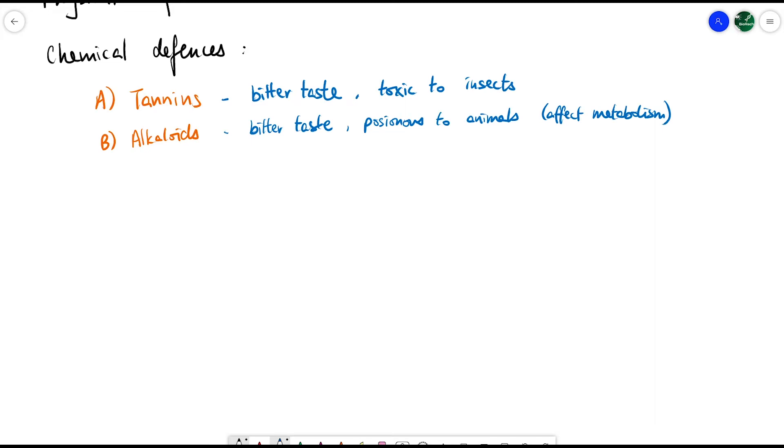The second type is alkaloids, which have a bitter taste and are poisonous to animals by affecting their metabolism. Some chemicals we use nowadays are naturally alkaloids that humans use for different purposes.